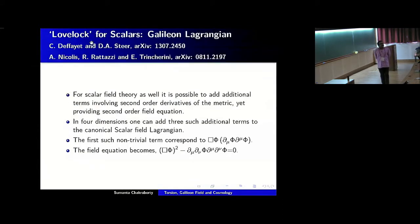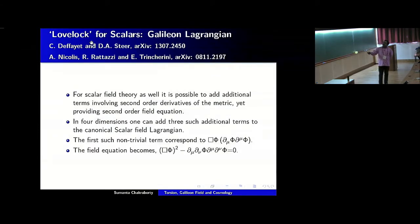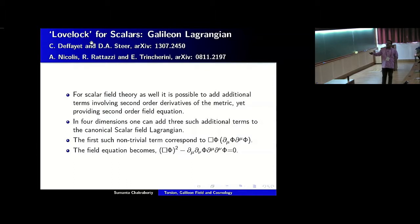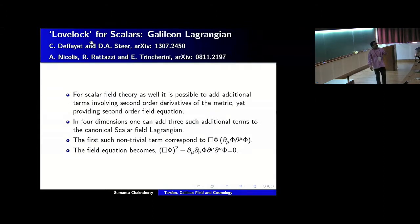The question is whether, in the context of scalars, we can construct a similarly degenerate Lagrangian analogous to what GR does for gravity. That is where the name Galileon Lagrangian comes from. It was first introduced in a 2008 paper — you can refer to that article for a review on this topic. For a scalar field, you can add additional terms involving double derivatives of the field which do not lead to any violation, and the equation of motion remains second order. In four dimensions, it turns out you can add three such additional terms beyond the canonical kinetic term of the scalar field. The first such non-trivial term takes the following form.